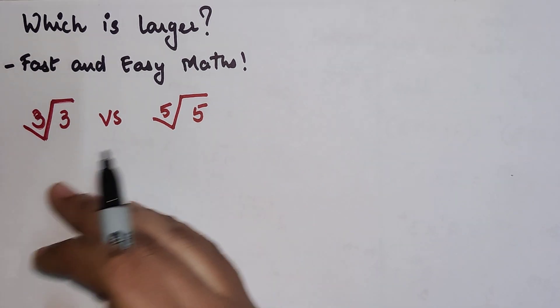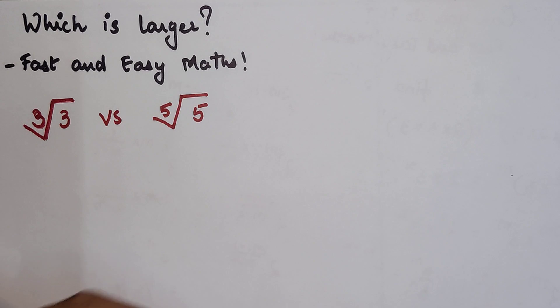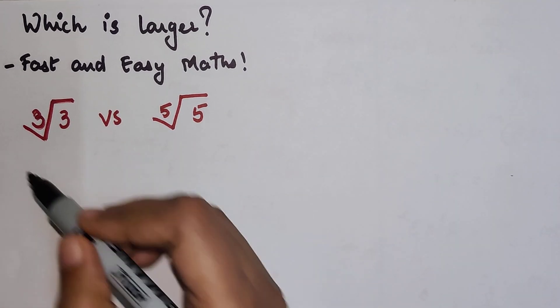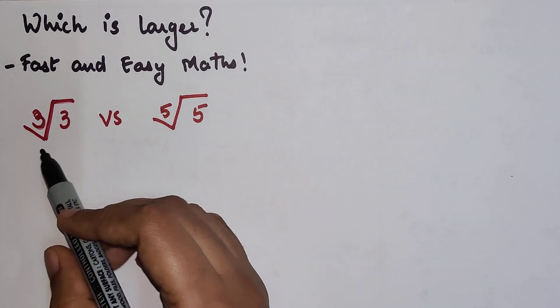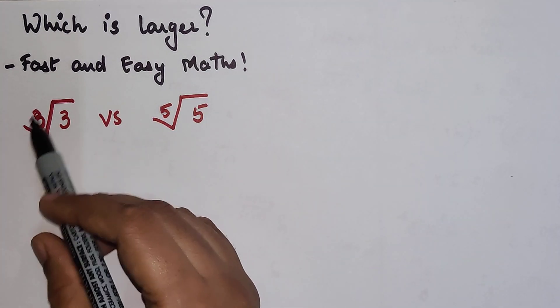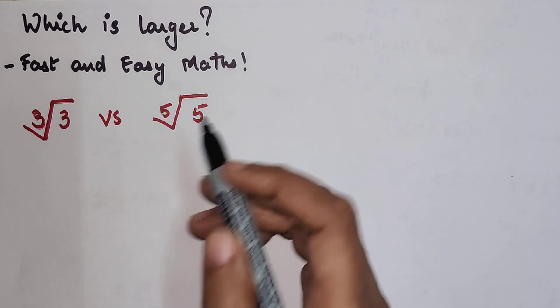Today we are going to solve a question which was asked in one of the entrance exams. The question is: we have to find the larger entity amongst cube root of 3 versus 5th root of 5.